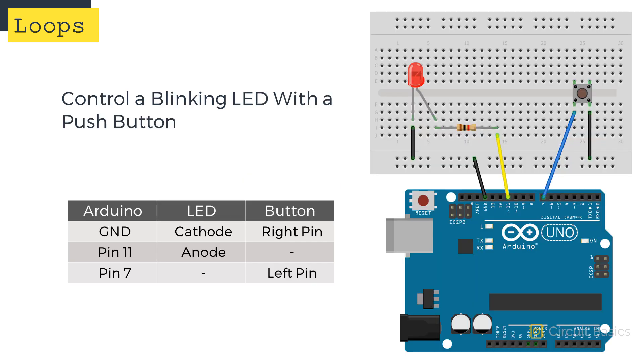I'm going to build a circuit that will blink an LED as long as a push button is pressed. This is actually the same circuit we used in the lecture on buttons and switches. There's an LED connected to pin 11 with a current limiting resistor, and a push button connected to pin 7.